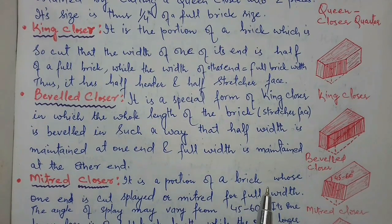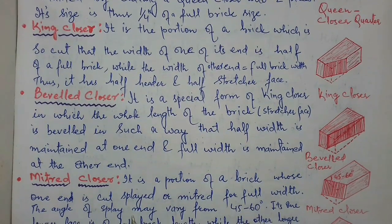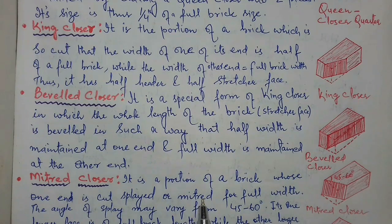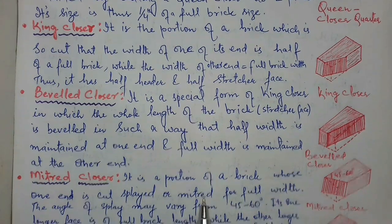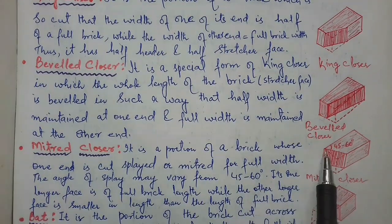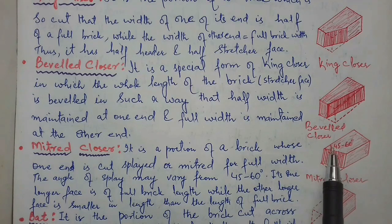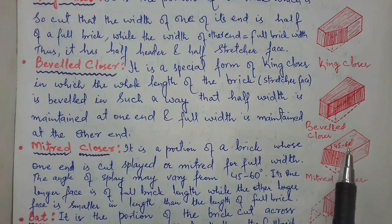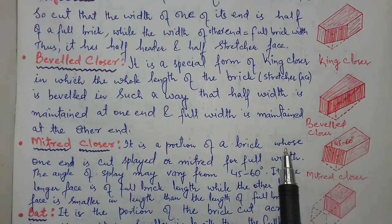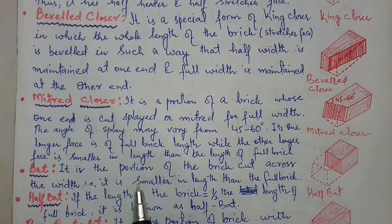Mitered closer: it is a portion of a brick whose one end is cut splayed or mitered for the full width. The angle of splay may vary from 45 to 60 degrees. As you can see here, this width is mitered at an angle of 45 to 60 degrees. If you see a brick like this, you can call it a mitered closer.